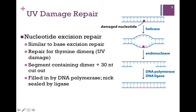The first enzyme to bind is helicase, which separates the two strands. Then an endonuclease binds to the single-stranded region containing the thymine dimer and cuts out a segment containing the dimer — about 30 nucleotides. Then a DNA polymerase fills in the missing nucleotides, and finally DNA ligase seals the nick.